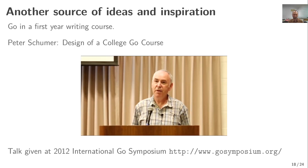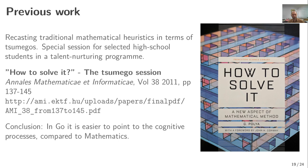I also have previous work: an experimental session with high school students where the idea was to teach classical, traditional mathematical heuristics. That's not easy to do directly, so I decided we could do the same thing when solving Go problems. The conclusion was that in Go it is easier to point to the cognitive processes compared to mathematics, where a lot more is happening. Go is actually even more abstract in that sense.